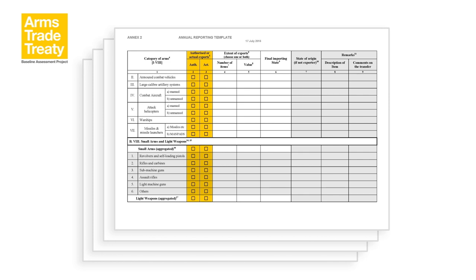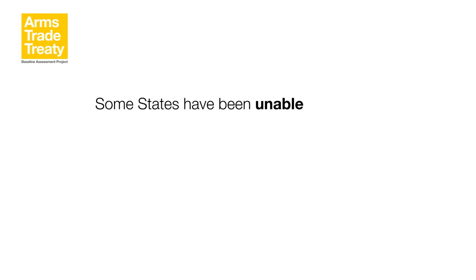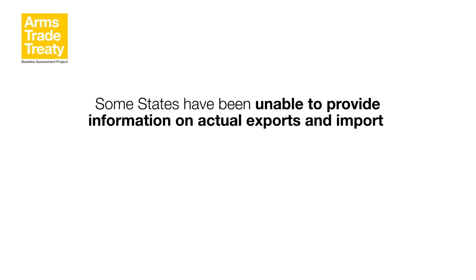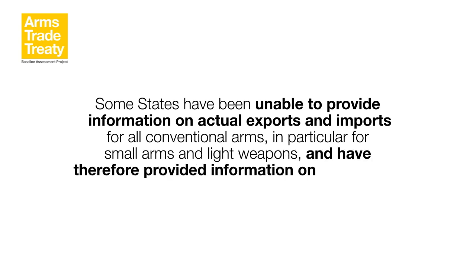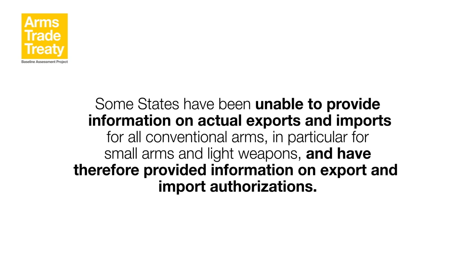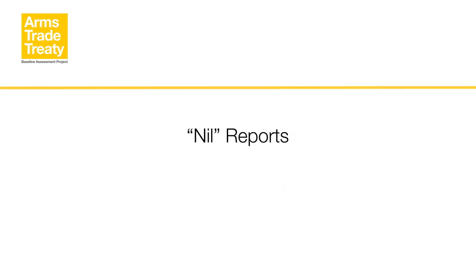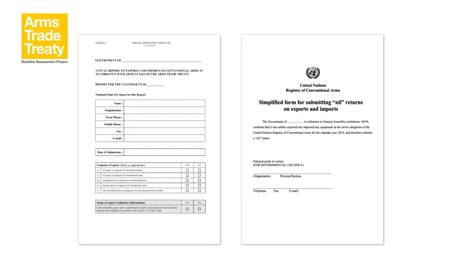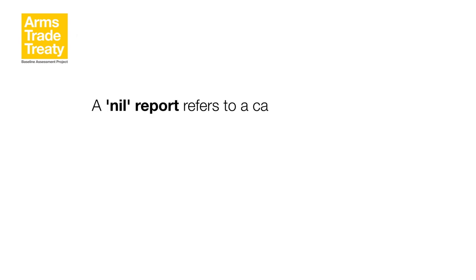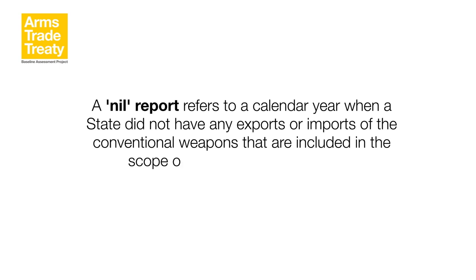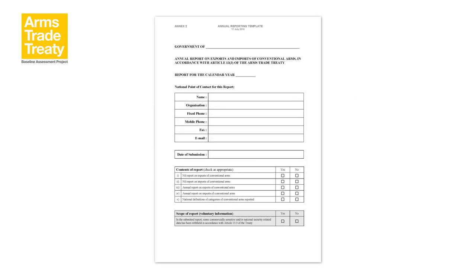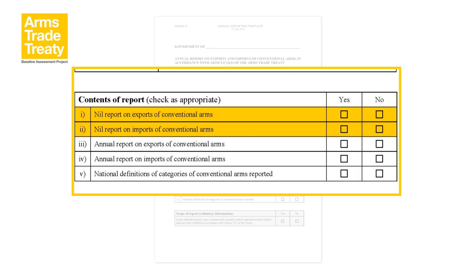The UN Register requests that states provide information on actual exports and imports. However, some states have been unable to provide information on actual exports and imports for all conventional arms, in particular for small arms and light weapons transfers, and have therefore provided information on export and import authorizations. In both the arms trade treaty and the UN Register, states have the opportunity to provide a nil report. A nil report refers to a calendar year when a state did not have any exports or imports of the conventional weapons included in the scope of the treaty or UN Register. States may complete a nil report for exports and a full report for imports, or vice versa.